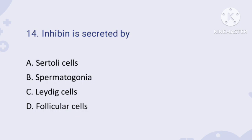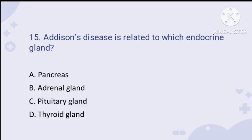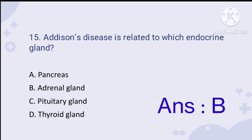Question number fourteen: inhibin is secreted by which cells? Inhibin is a hormone produced by the Sertoli cells of the testis. Therefore, the right answer is option A: Sertoli cells.